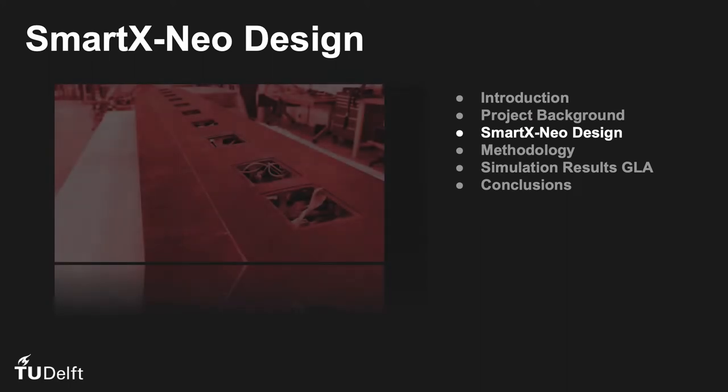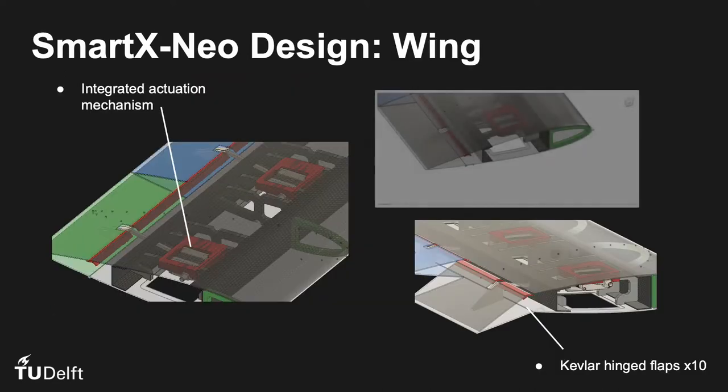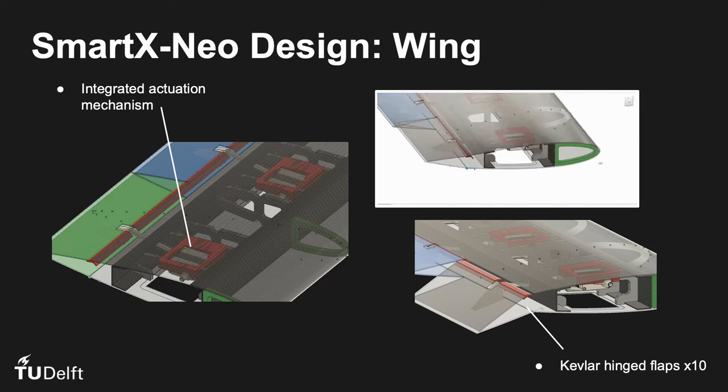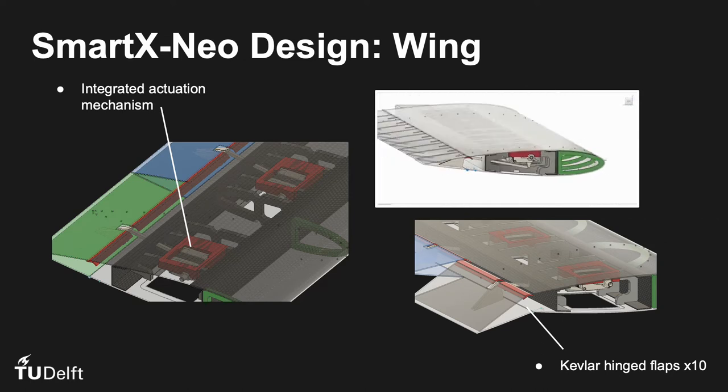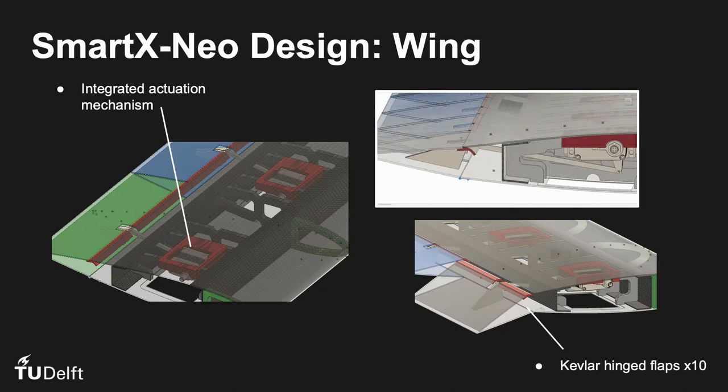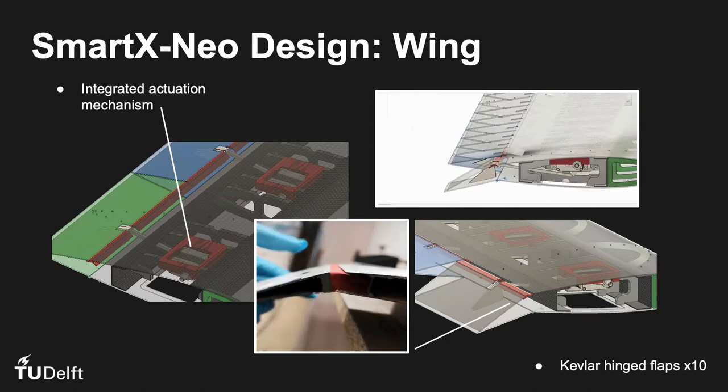Let's have a look at the design behind the SmartX Neo and the autonomous glider platform. The SmartX Neo is a composite wing with carbon fiber skin and 3D printed structural components reinforcing the wing box structure. The servo mechanism is integrated to make the profile as smooth as possible. A hinge is facilitated by a Kevlar layer cured between the carbon fiber skin.